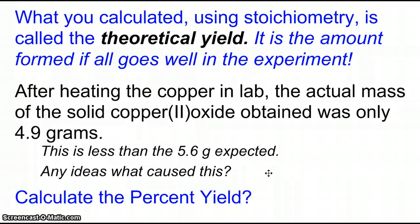And the mistakes that I'm talking about are not something like, I copied the mass down wrong. I'm talking about, what did you do, perhaps, in the procedure that could have caused your value to be less than what was expected? So, the question at hand, though, is can you calculate the percent yield?